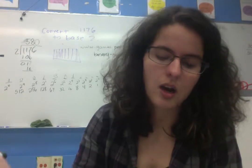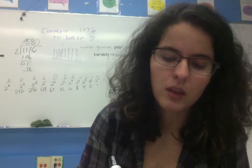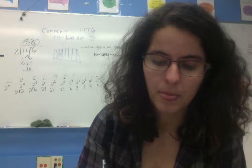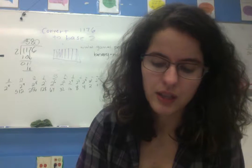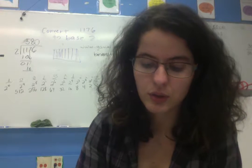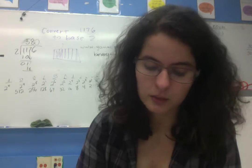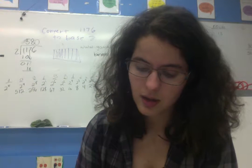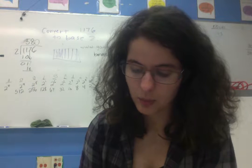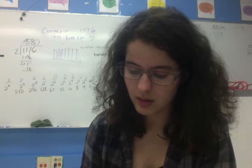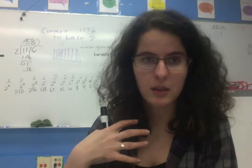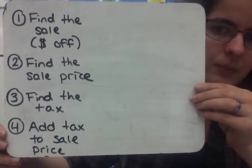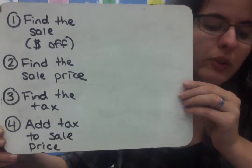So in every class it evolved, but we had something that was approximately: first people decided they wanted to find the sale, how many dollars off is it going to be. Then, how are they going to use that to find the sale price, what you would be paying when you went up to the cash register. Then they decided we need to figure out the tax. And then last, we can add the tax to that sale price, and that's going to give us the actual cost to me. So we developed a four-step way of thinking about this conundrum.